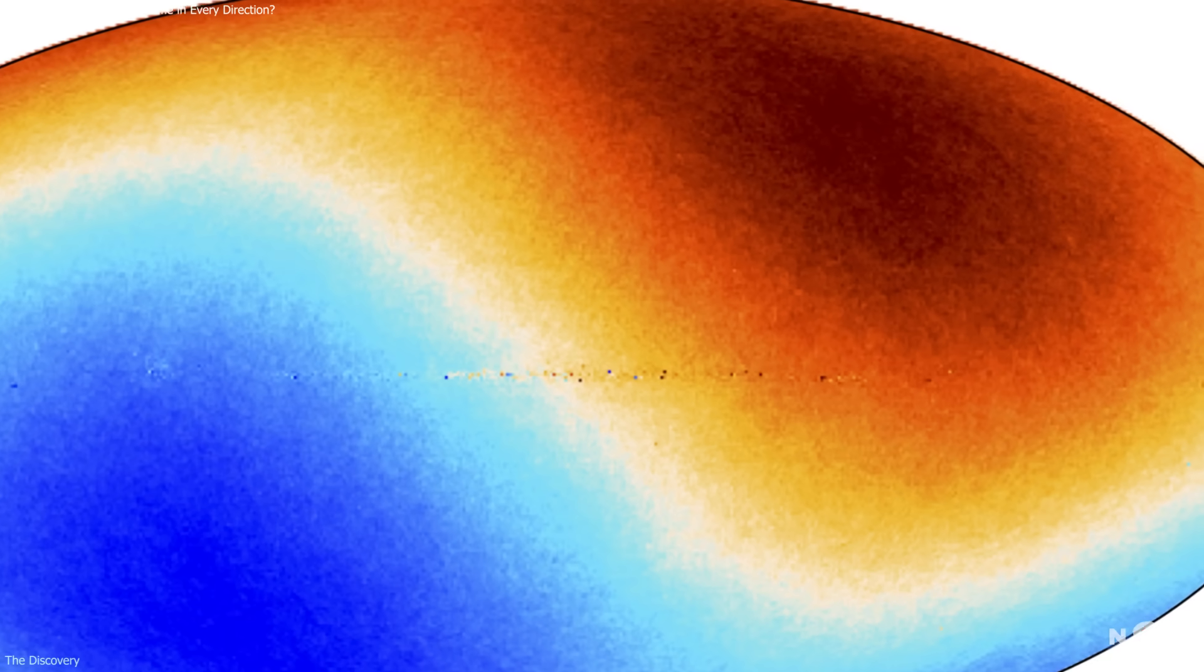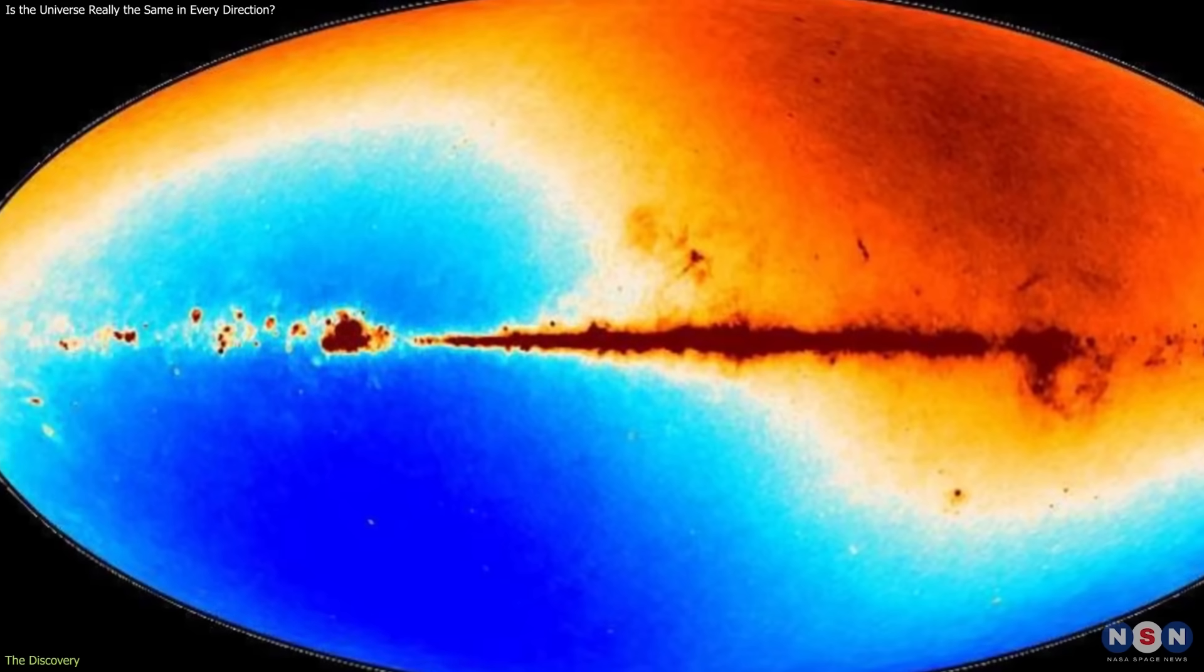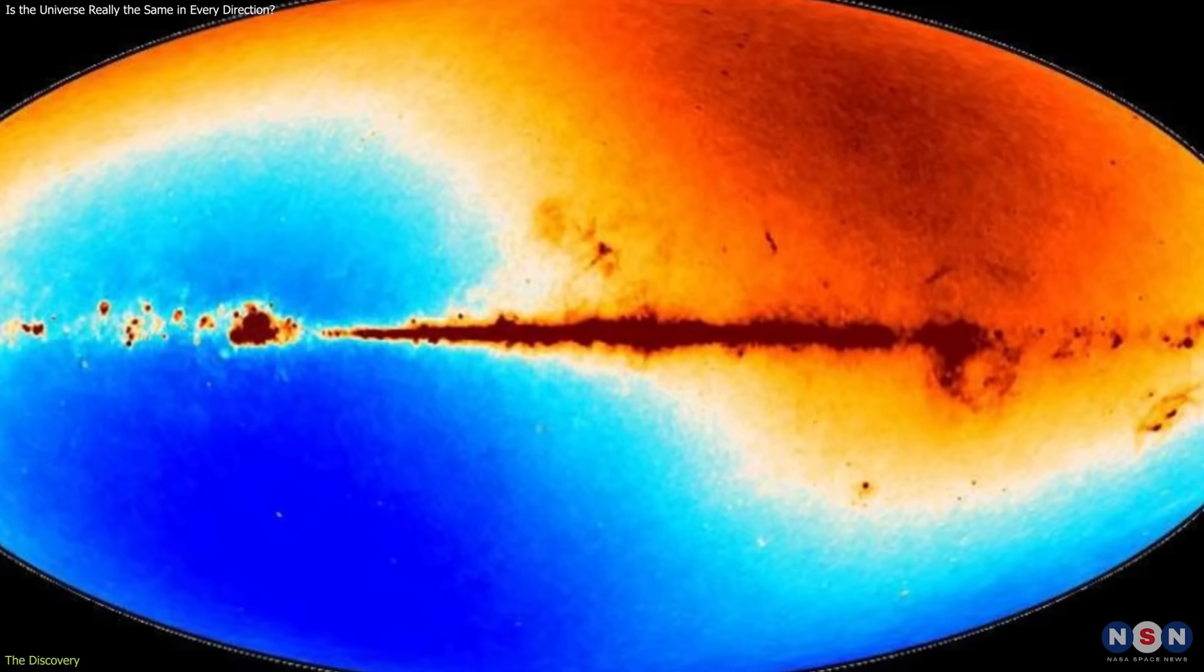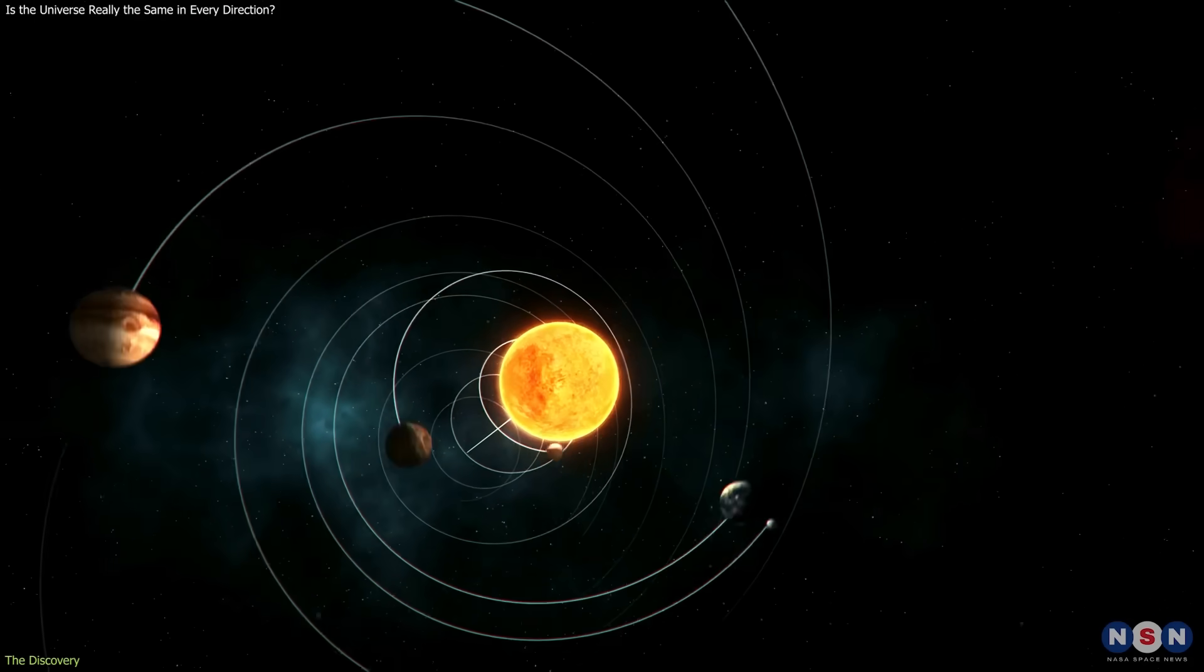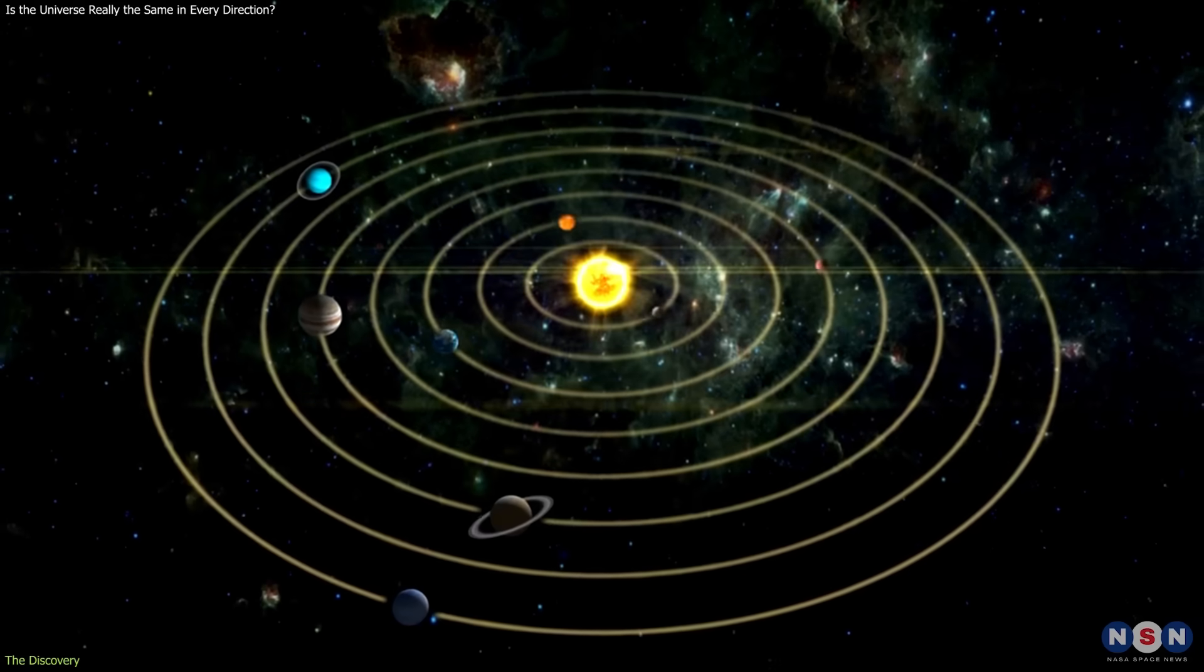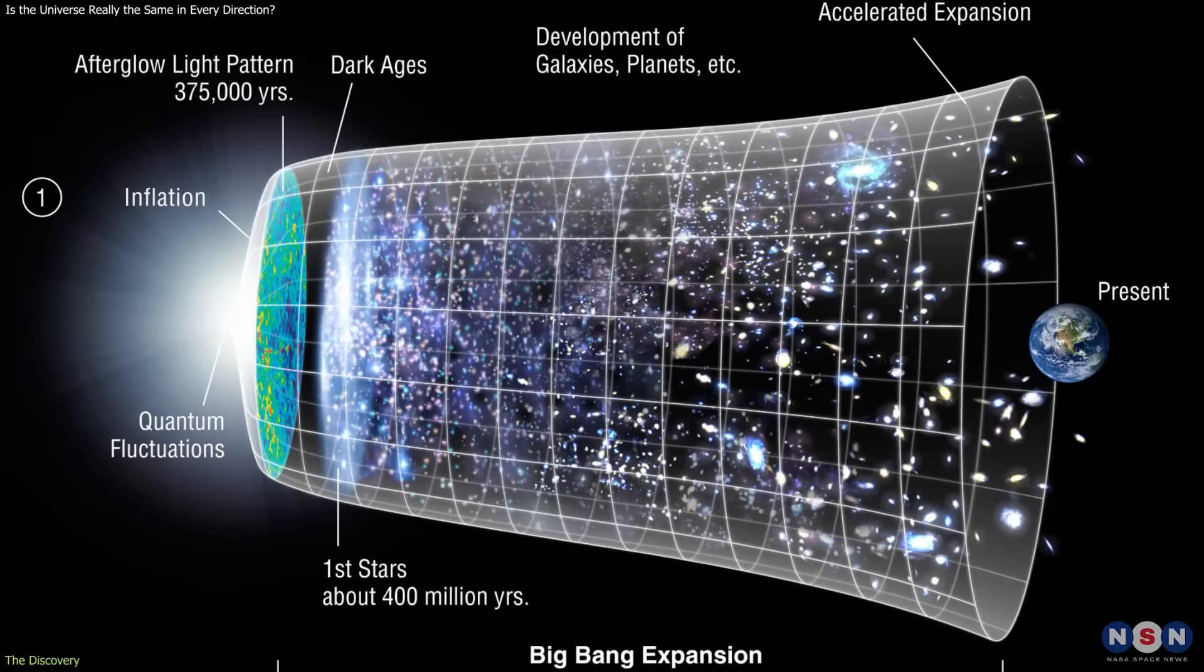One direction of the sky appears slightly hotter, while the opposite direction appears slightly cooler. This dipole has long been interpreted as a Doppler effect, caused by our motion through space relative to the cosmic rest frame. That explanation is well understood and does not conflict with the standard cosmological model.